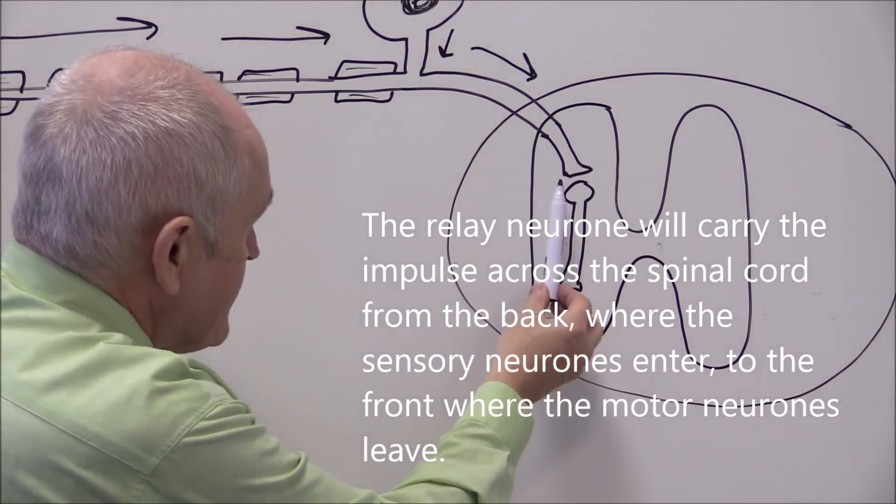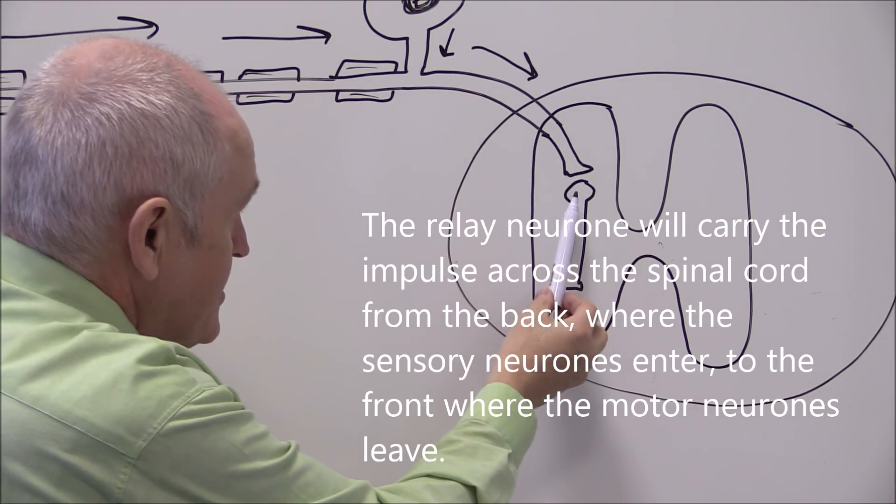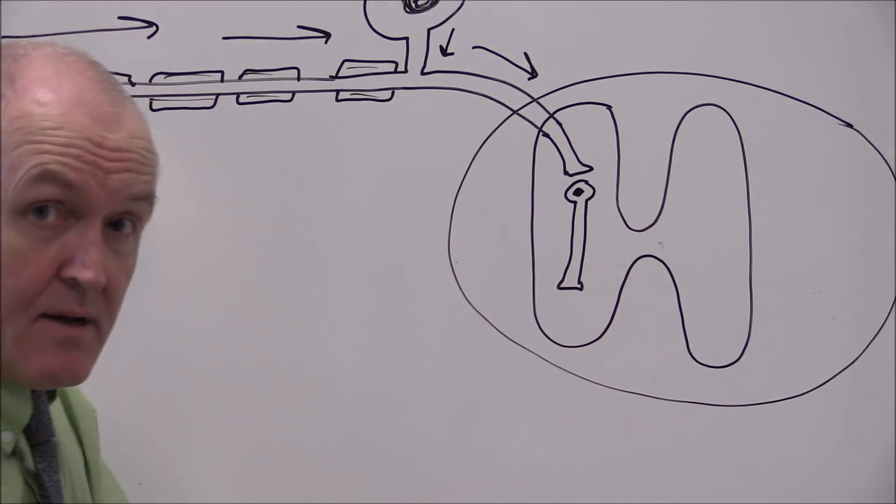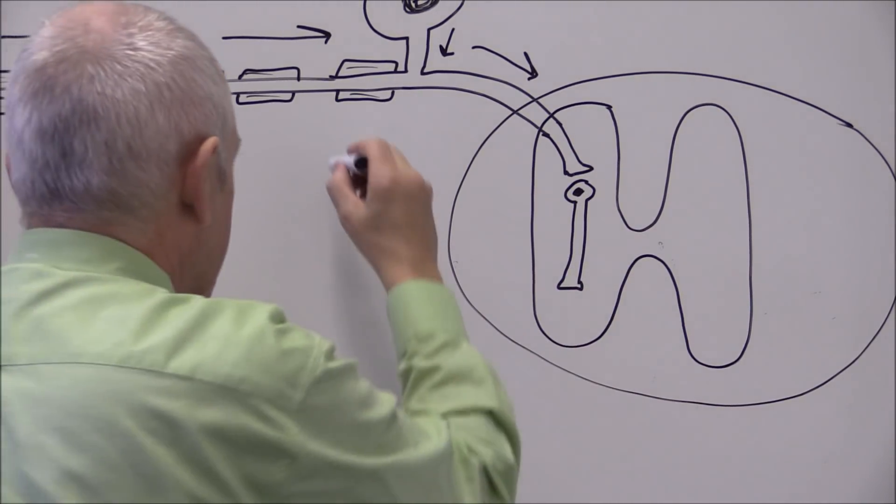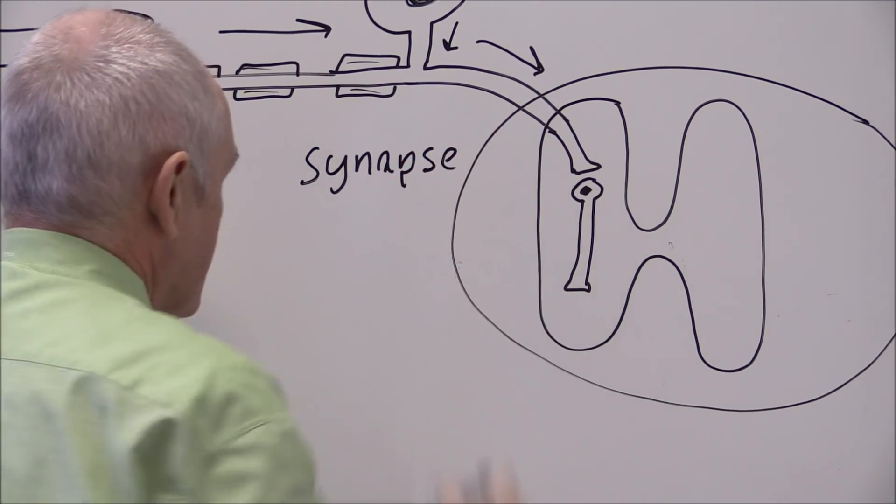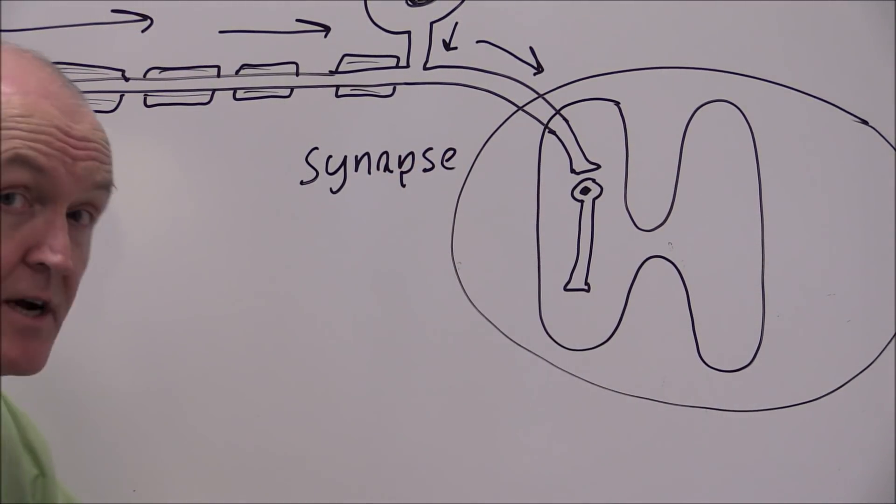And we notice that the sensory neuron is not touching the relay neuron. There's a physical gap and that physical gap of course is the synapse. There's always this physical gap; they don't actually touch.